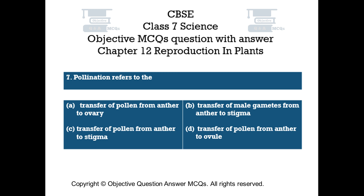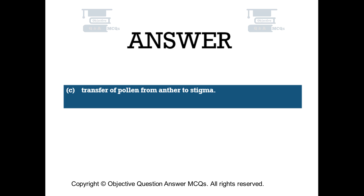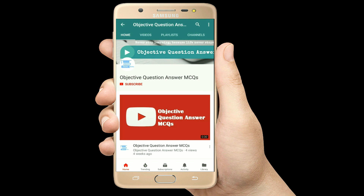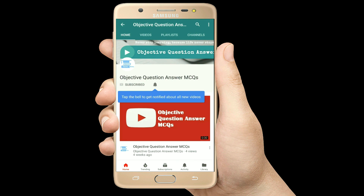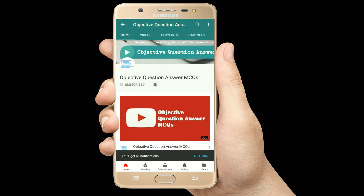The right answer is Option C — transfer of pollen from anther to stigma. And always remember, never stop learning, because life never stops teaching.